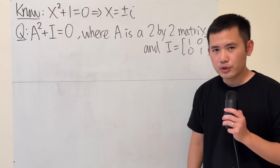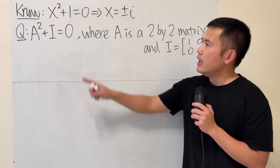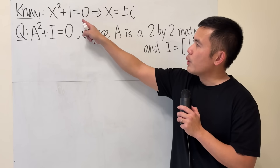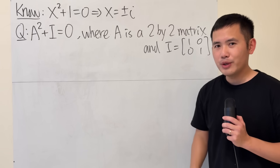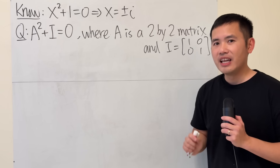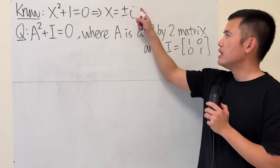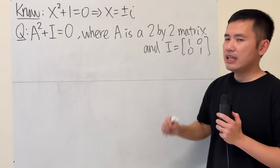As we all know, the quadratic equation x squared plus 1 is equal to 0 has two non-real solutions, namely i and negative i.